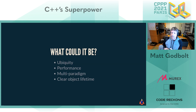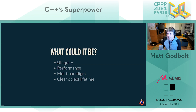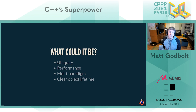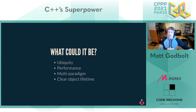That brings us to performance. C++ is known for allowing us to achieve performance — it's not necessarily fast in itself, but we can reason about the performance characteristics of the code we write. If we really need to, we can drop all the way down to assembly and make things go as fast as we'd like, or lay out memory in particular ways to make it super fast. So maybe performance is the superpower of C++.